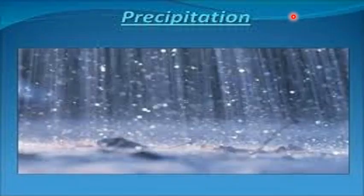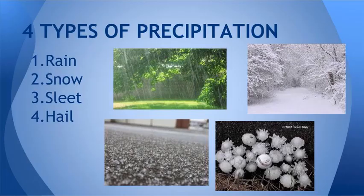Precipitation is the falling of water in solid or liquid state on the surface of the earth. Types of precipitation include rain, snowfall, sleet — which is a mixture of rain and snow — hail, and the fifth form is drizzle. Light rainfall is known as drizzle.